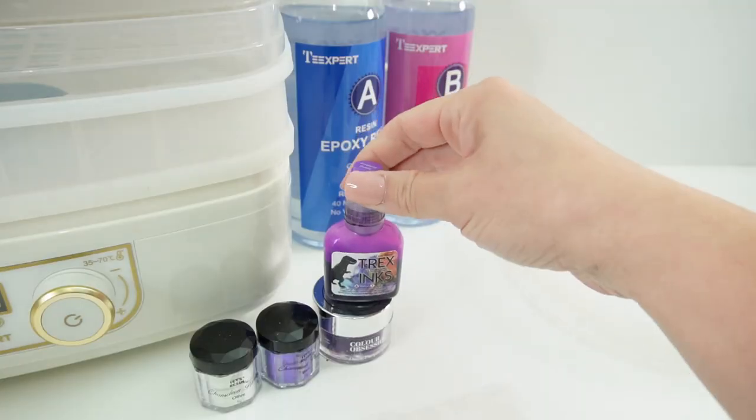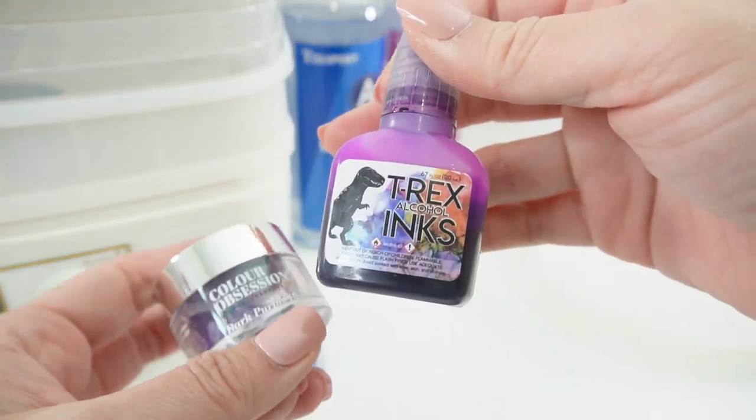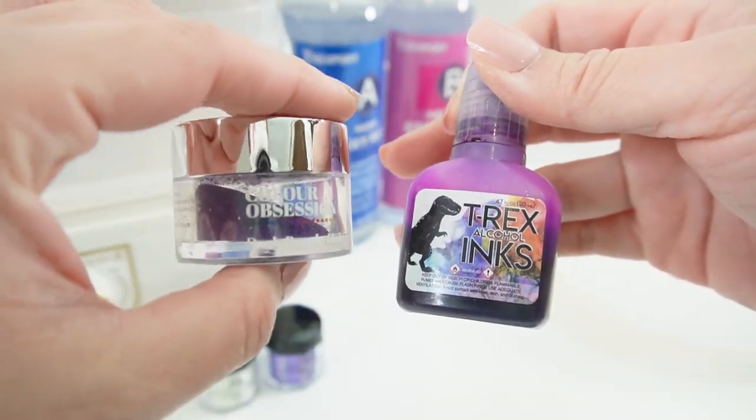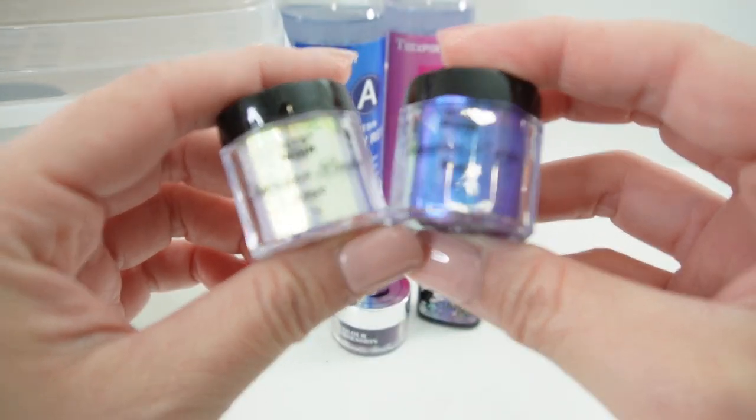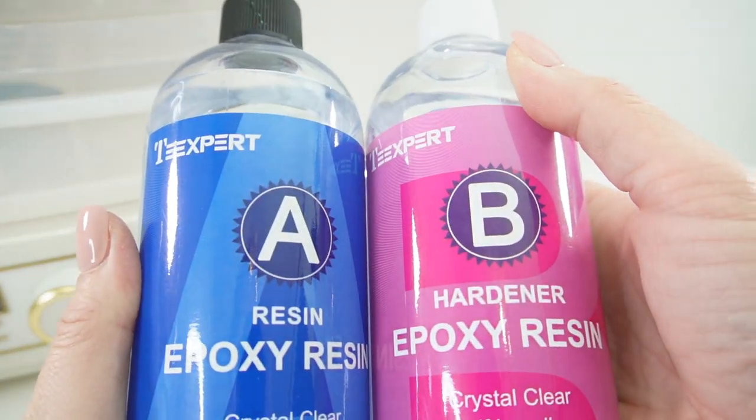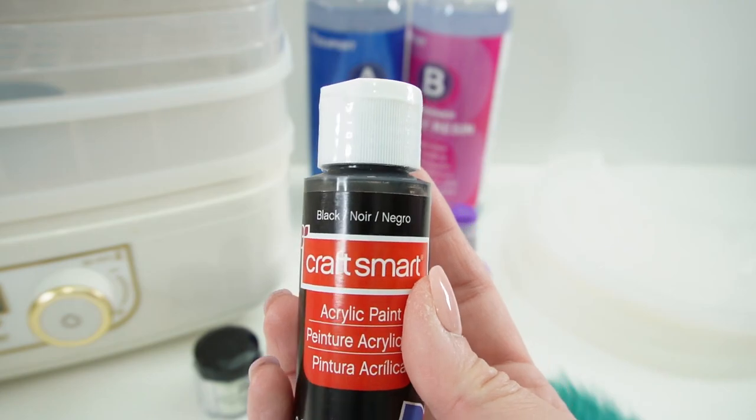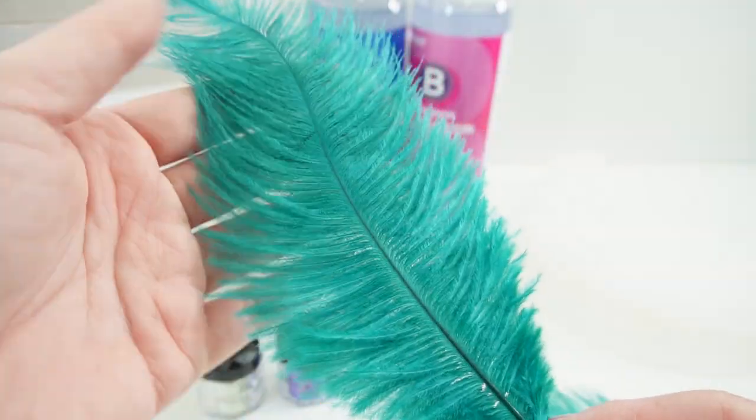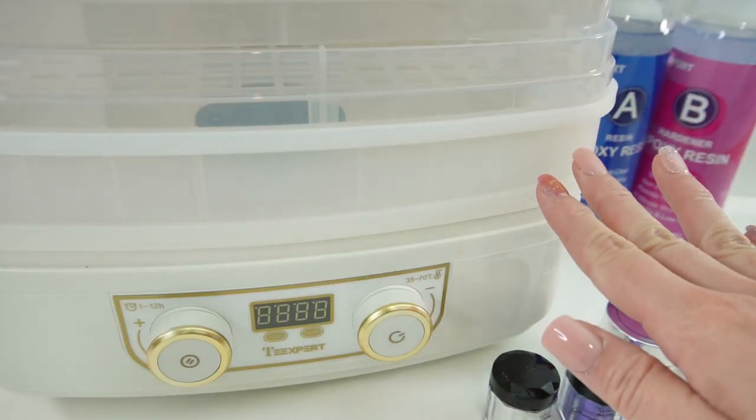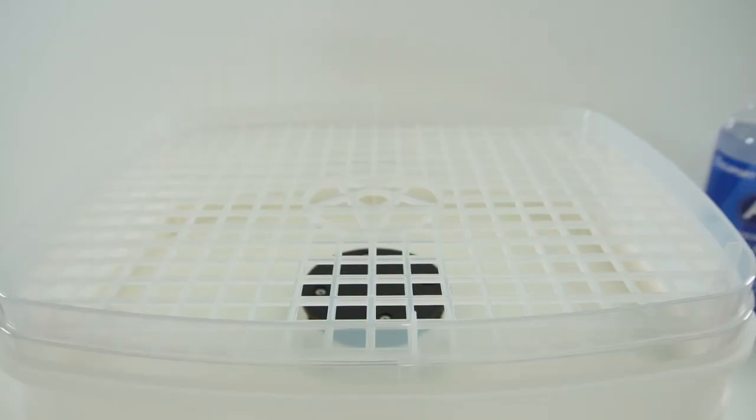I'll be using some purple alcohol ink and some glitter also in purple. Add some mica powder from Let's Resin. I'll be using epoxy resin from Tea Expert, some black acrylic paint, a really cool teal feather, and to speed up the curing process I'll be using the Tea Expert resin speed cure.